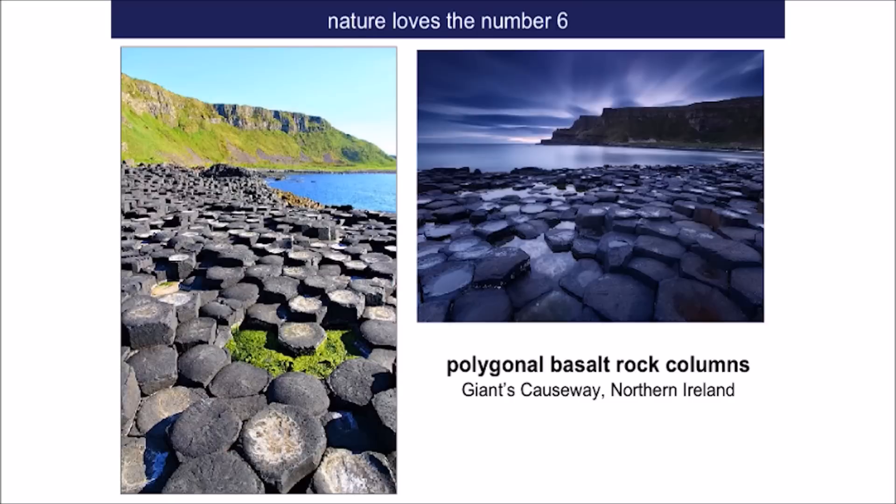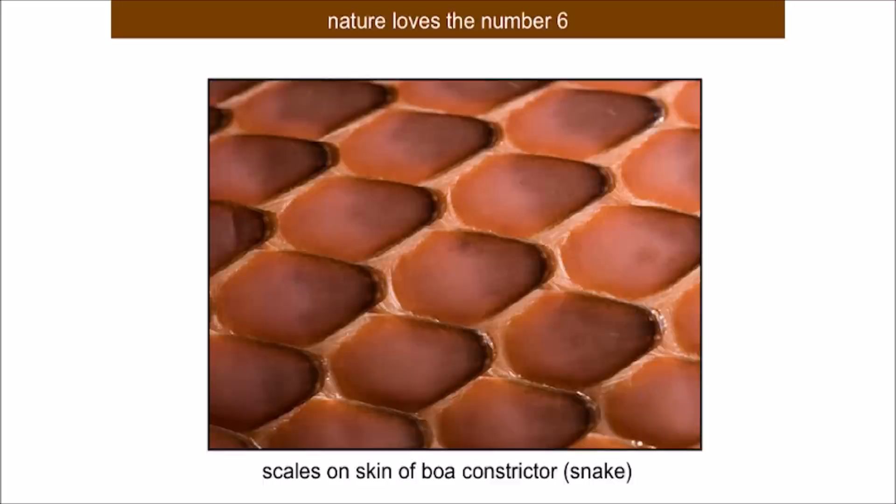There's a place in Northern Ireland called Giant's Causeway that is really a collection of rock columns. These are columns that are naturally carved by nature. And most of them are hexagons. Of course, if you look at the scales of the snake's skin, you see hexagons.